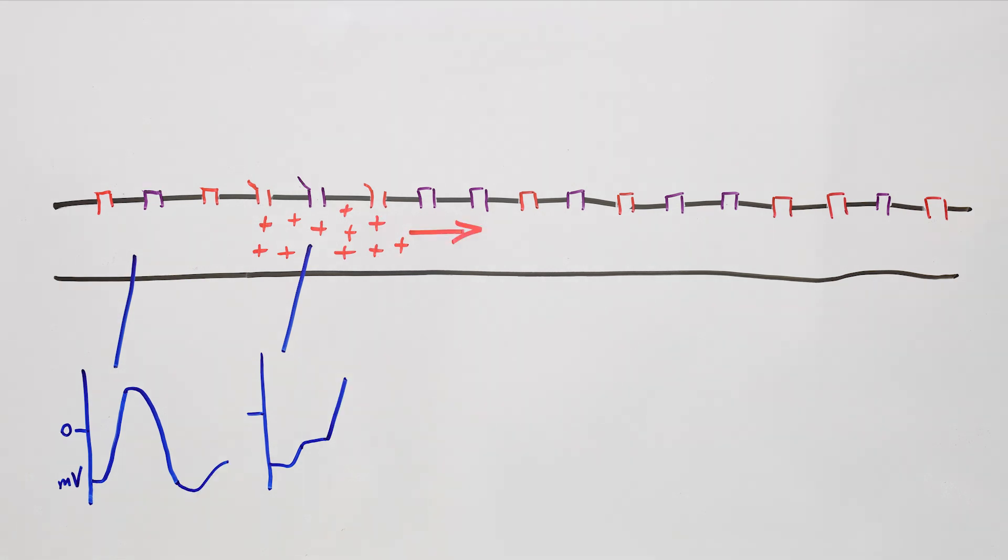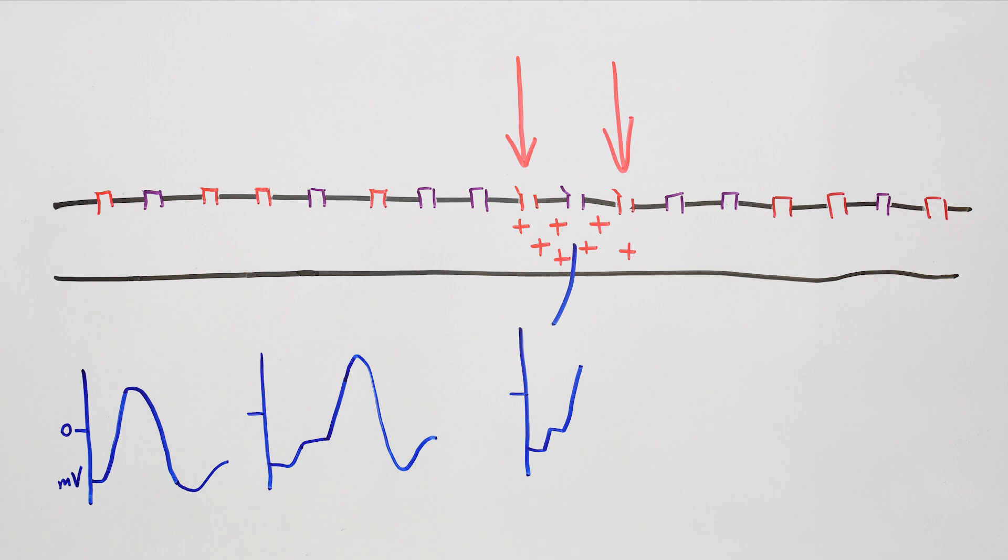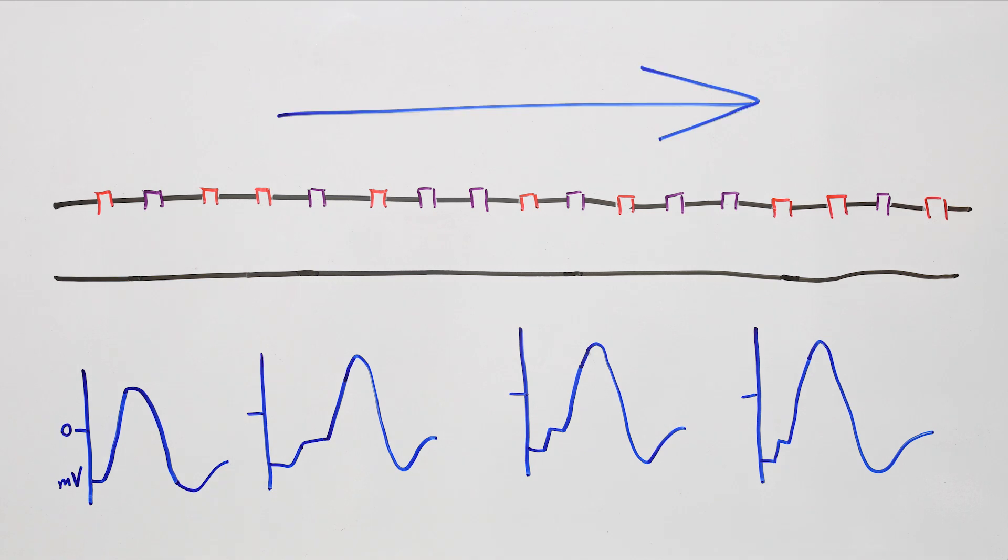And then these channels in turn let in more ions, increase the voltage, create the current, and open these channels. And so on, and so on. And that's how the spike moves down the axon.